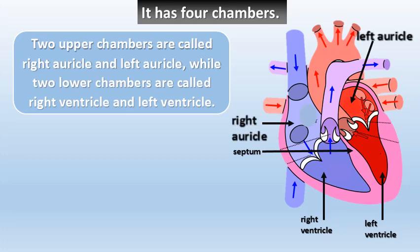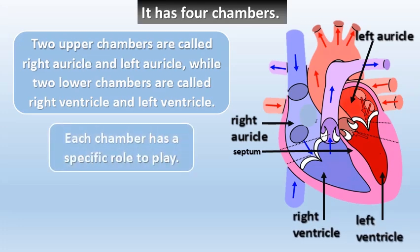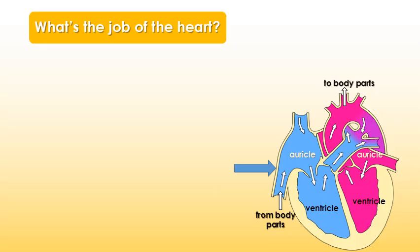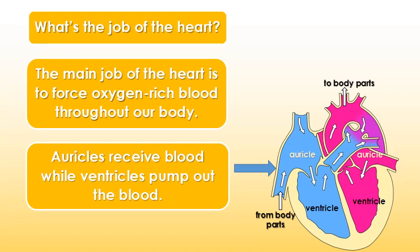The heart has four chambers. The two upper chambers are called the right auricle and left auricle, while the two lower chambers are called the right ventricle and left ventricle. Each chamber has a specific role to play. The right and left sides of the heart are completely separated by a muscular wall called the septum.